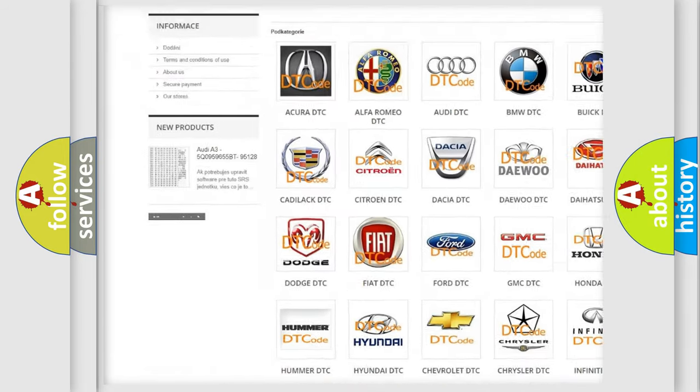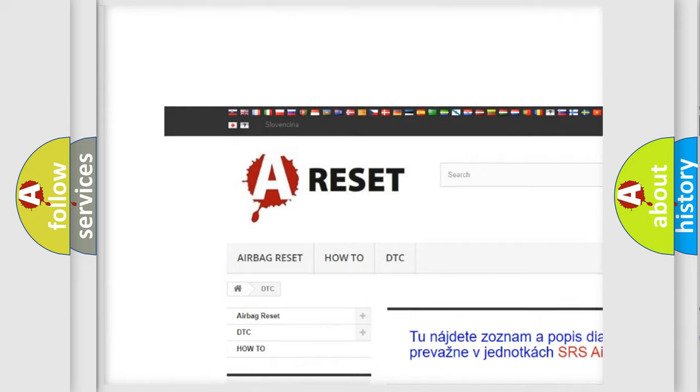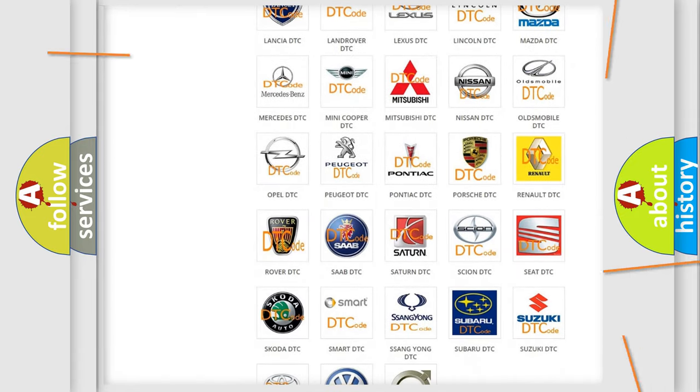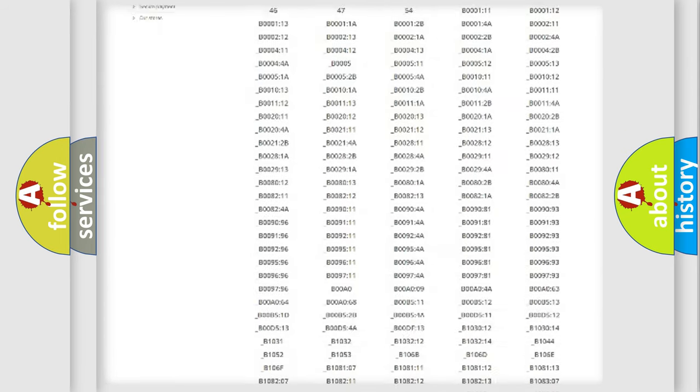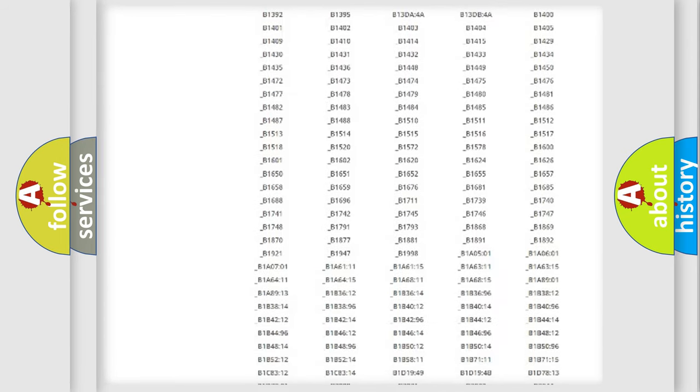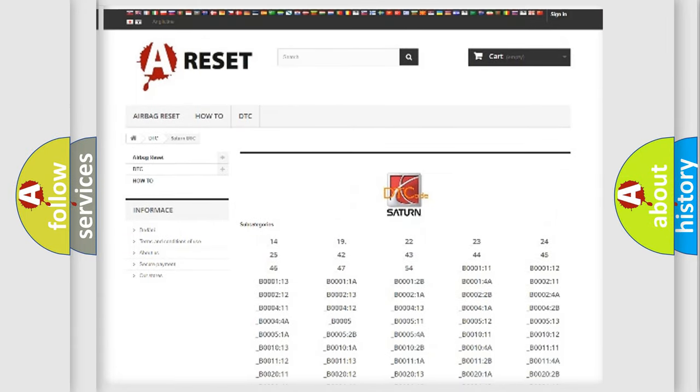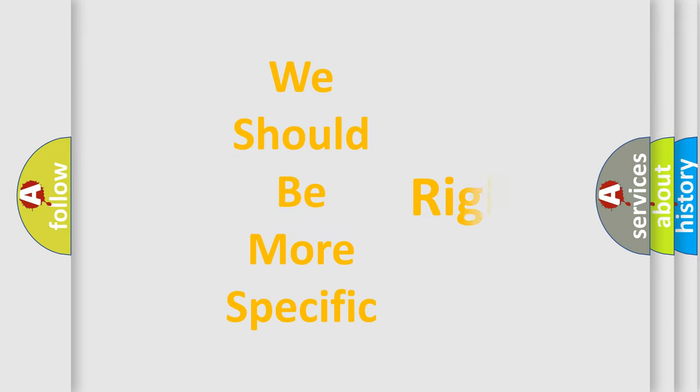Our website airbagreset.sk produces useful videos for you. You do not have to go through the OBD2 protocol anymore to know how to troubleshoot any car breakdown. You will find all the diagnostic codes that can be diagnosed in Saturn vehicles, and many other useful things. The following demonstration will help you look into the world of software for car control units.